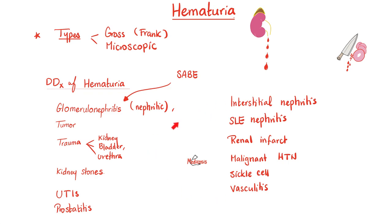Which causes of hematuria will have casts? If the problem is in the tubule, you'll have casts. Glomerulonephritis can have red blood cell casts. Kidney tumors — yes, casts. Bladder tumors — no. Trauma to the kidney — yes. Bladder or urethra — no. Kidney stones injuring the kidney — yes, casts. Interstitial nephritis — yes, casts.